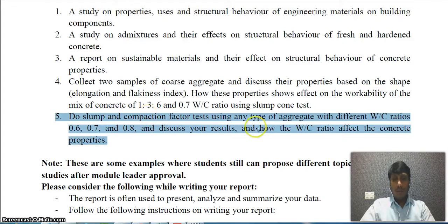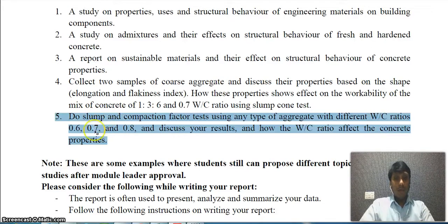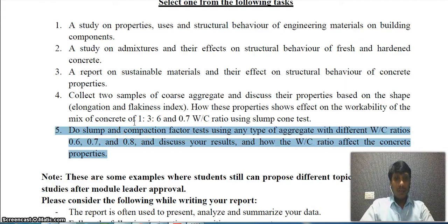In Task 5, you conduct both the slump cone test and the compaction factor test using any one type of aggregate, but with different water-cement ratios — 0.6, 0.7, and 0.8. You should discuss how the water-cement ratio affects the concrete properties.